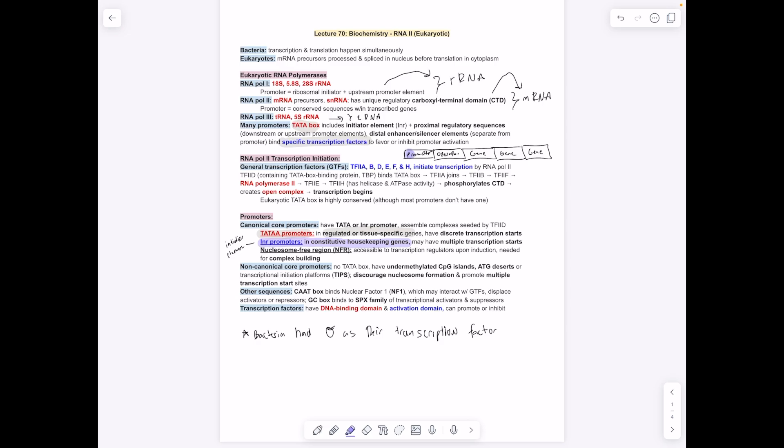The promoters, the promoter regions—you have the most common one is the TATA box. Then you have other transcription factors. Transcription factors, just like the sigma subunit in prokaryotes, have to bind to the promoter region to allow the RNA polymerase to bind to the promoter and start transcription. Core promoters: we have the TATA promoter for regulated or tissue-specific genes, and then you have the initiator element promoters, which are for constitutive housekeeping genes, and they have multiple transcription starts.